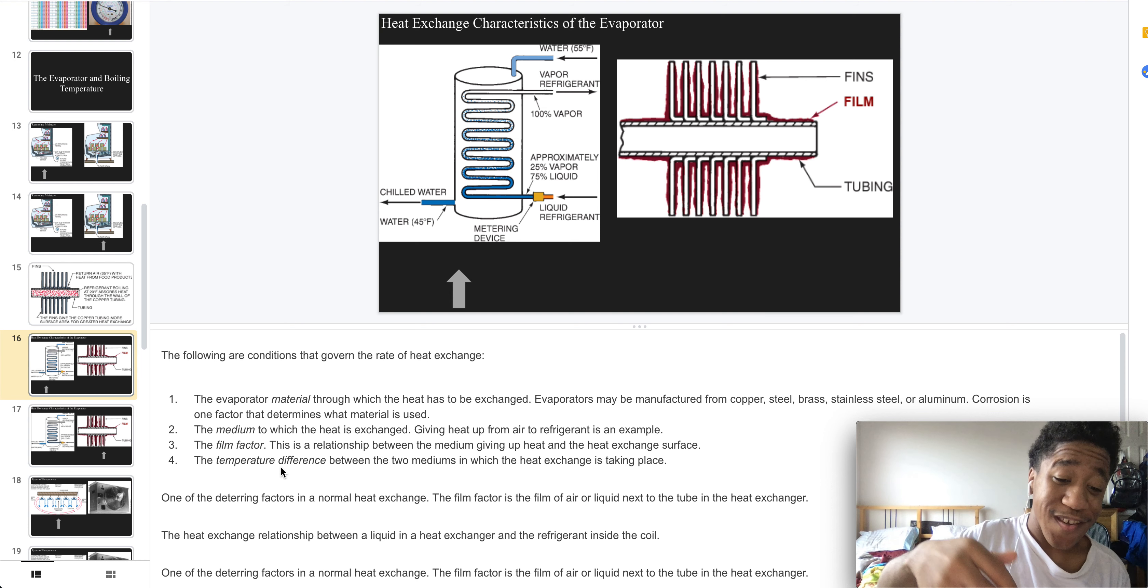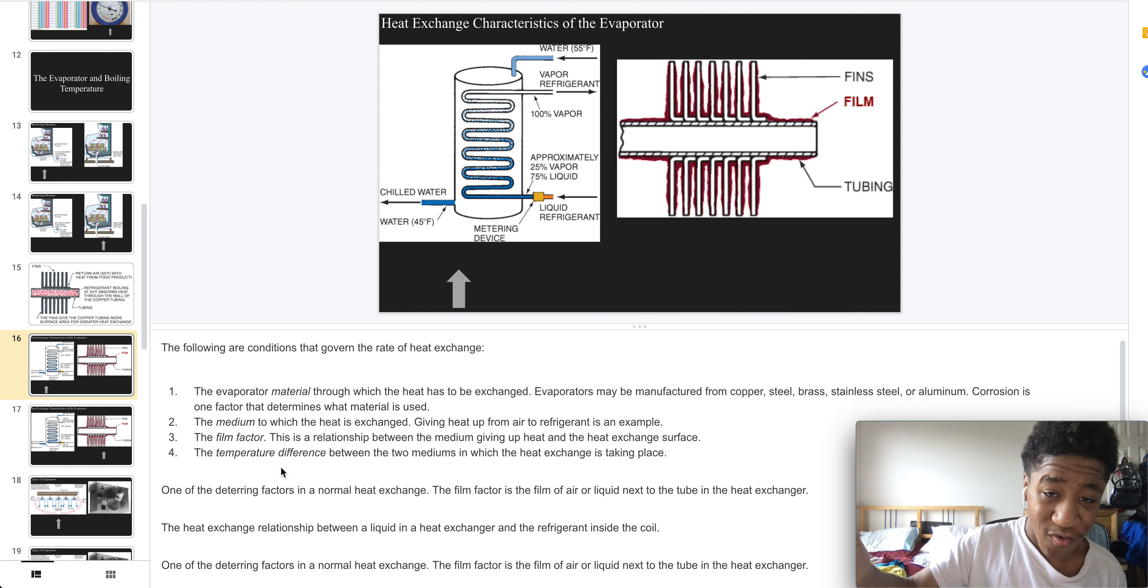The conditions that govern the rate of heat exchange are the evaporator materials through which the heat is exchanged, and the medium to which the heat is exchanged. The film factor, or relationship between the medium which is giving up heat and the heat exchange surface, the temperature difference between two mediums where the heat exchange is taking place, and the deterring factors in a normal heat exchange.